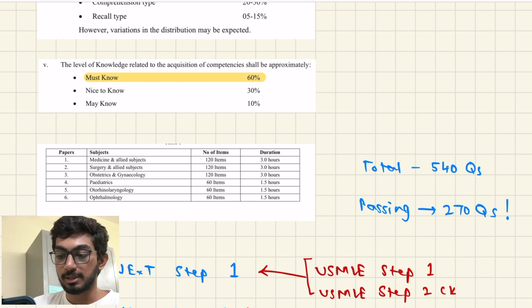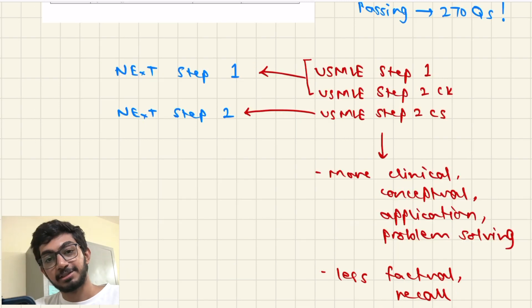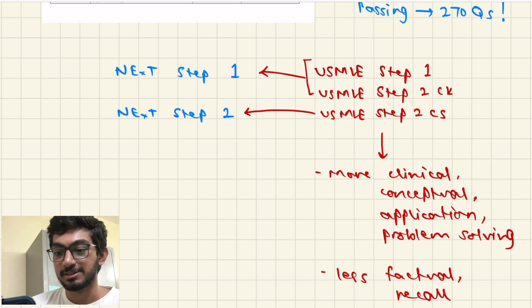What NMC has actually done is they just copy-pasted the USMLE system and literally just failed at what they've done. USMLE has the steps like Step 1, Step 2 CK, Step 2 CS - Step 2 CK is the clinical knowledge and Step 2 CS is the clinical skills which was a practical exam. What NMC has done is they've created NEXT Step 1 and NEXT Step 2, literally they've just copied the names as well. Step 1 is essentially going to be a combination of USMLE Step 1 and Step 2 CK, and NEXT Step 2 is going to be like a practical exam like the clinical skills exam.